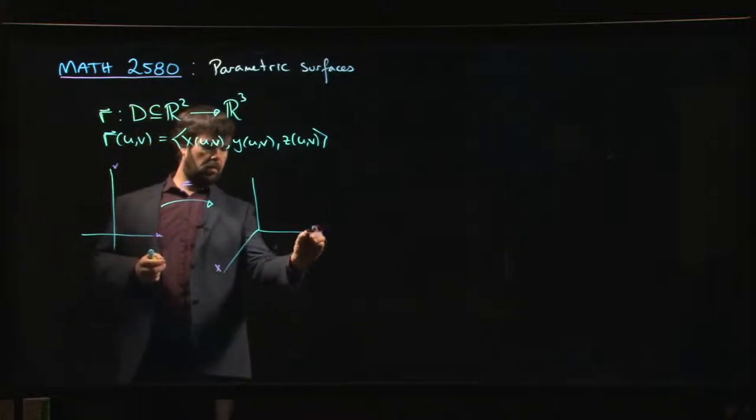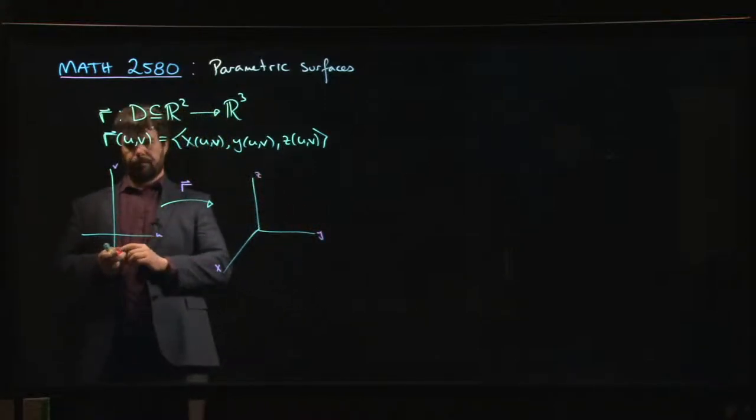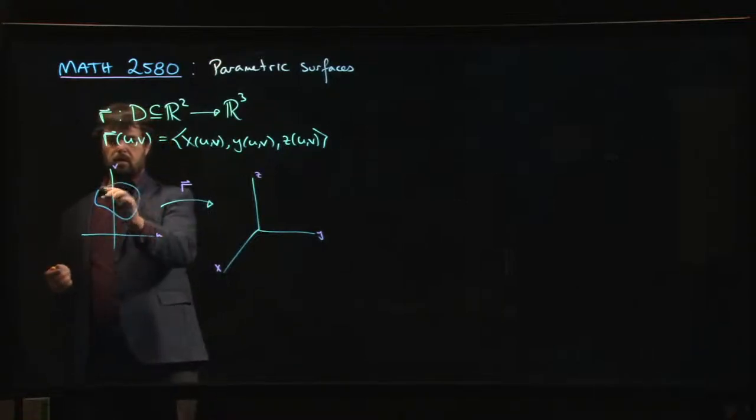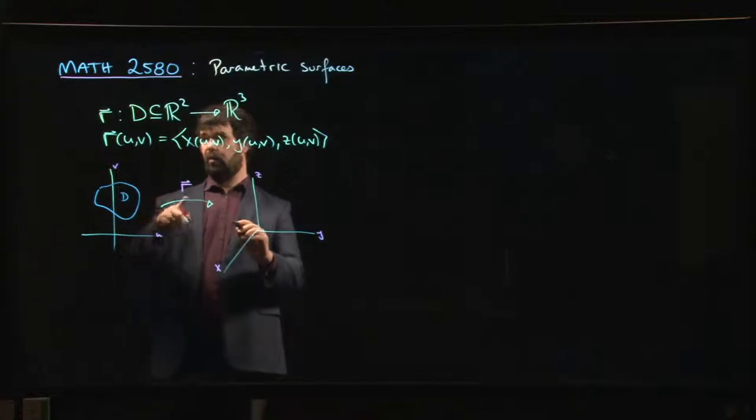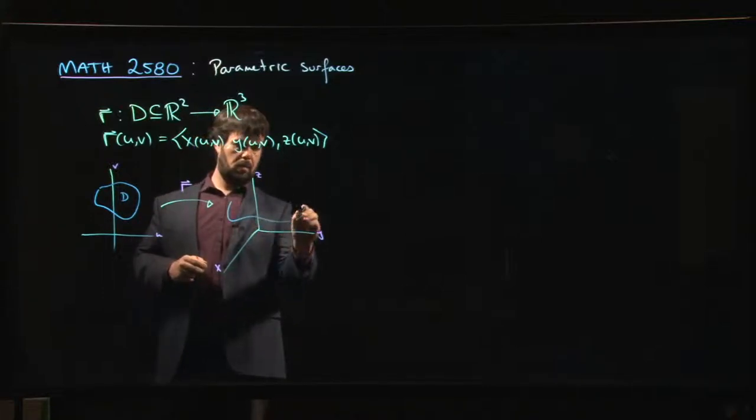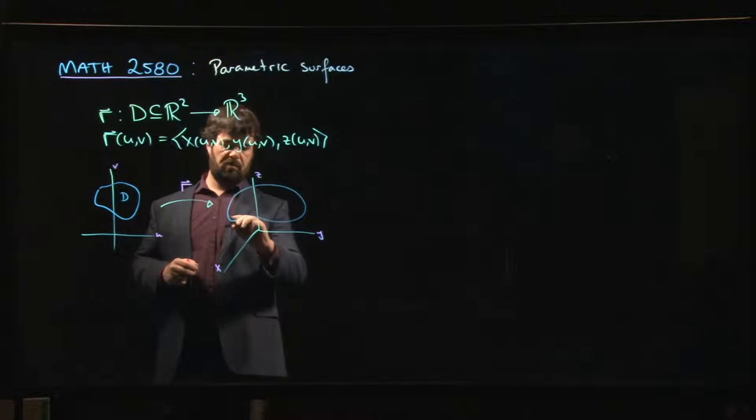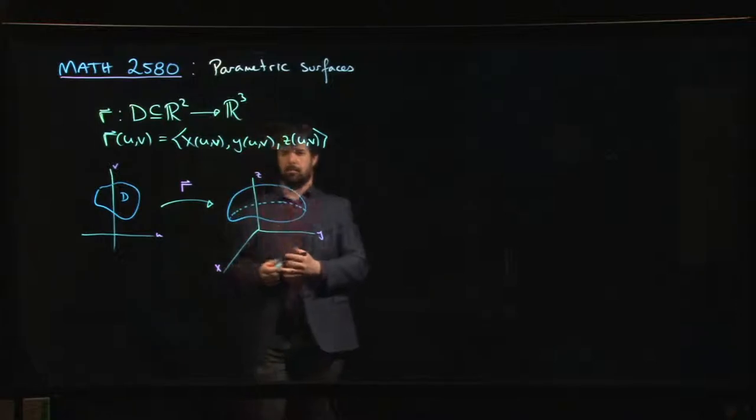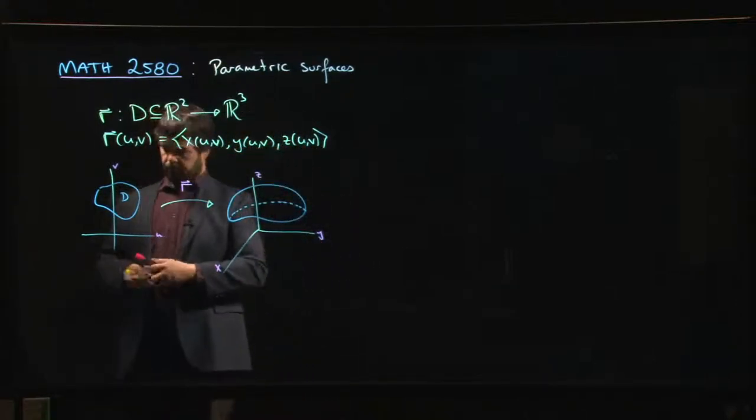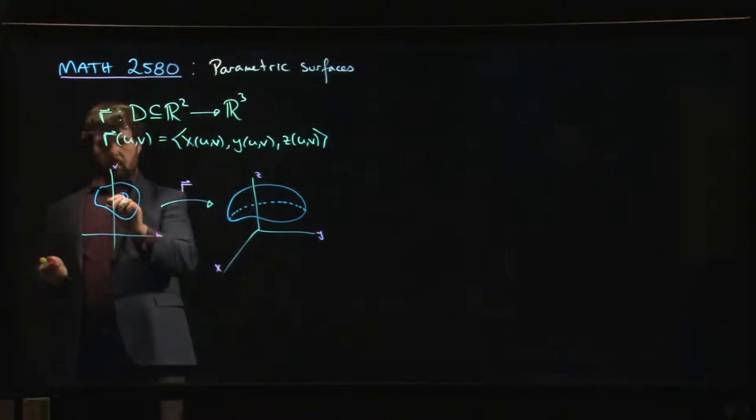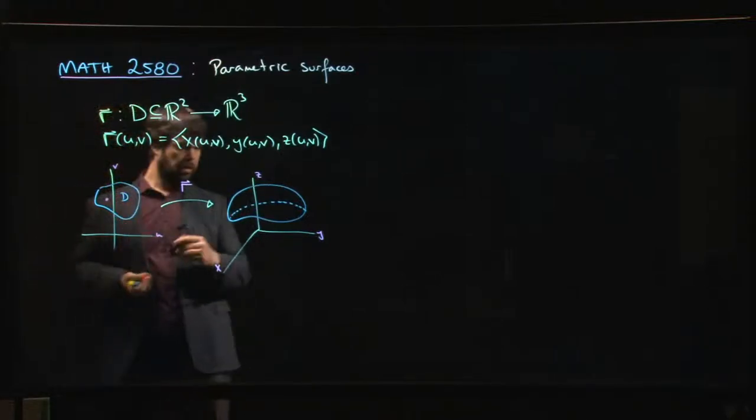This is with coordinates u and v, this with coordinates x, y, and z. The idea is that you've got some domain D over here, and that domain D is going to get transformed by this mapping into some region in three-dimensional space - a three-dimensional surface.